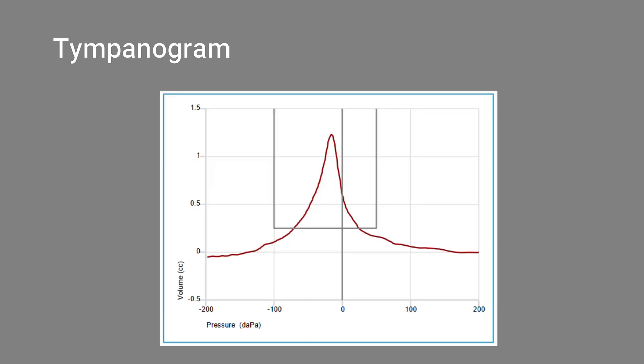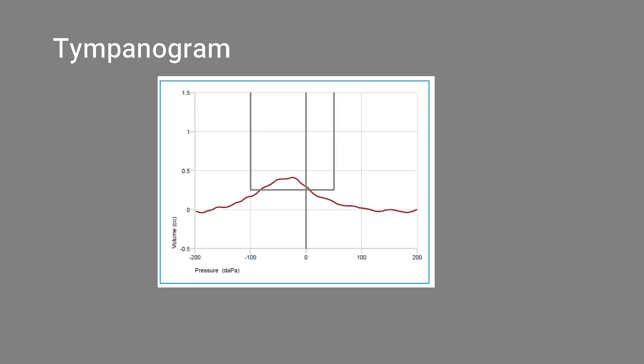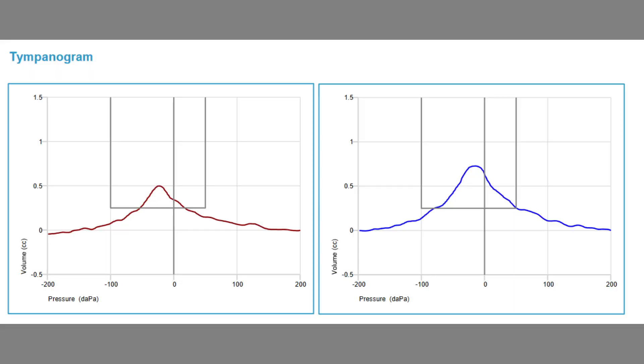A tympanogram is done by charting the compliance of the tympano-ossicular system against various pressure changes. Different types of graphs called tympanograms are obtained and are diagnostic of certain middle ear pathologies. The tympanometric peak is the maximum flow of acoustic energy into the middle ear, which occurs when the pressure in the air canal and middle ear is equal.